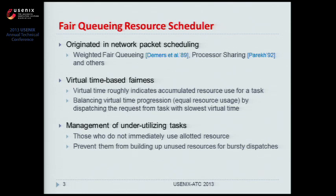Given these problems with time slice-based I/O scheduling, we set our sights on a different class of resource schedulers called fair queuing. Fair queuing originated in network packet scheduling on packet switches. The switch schedules packets between multiple network flows. Fair queuing achieves fairness through careful maintenance of virtual time — the virtual time for a task roughly indicates accumulated resource usage, and the scheduler dispatches the request from the task with the slowest virtual time.